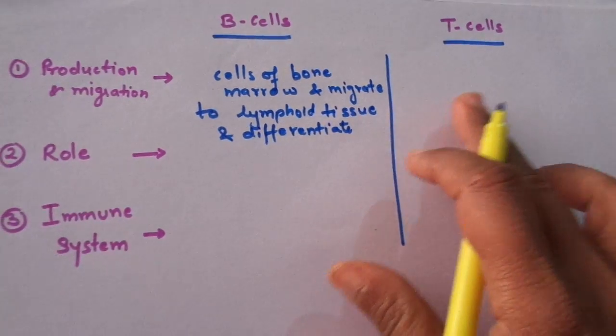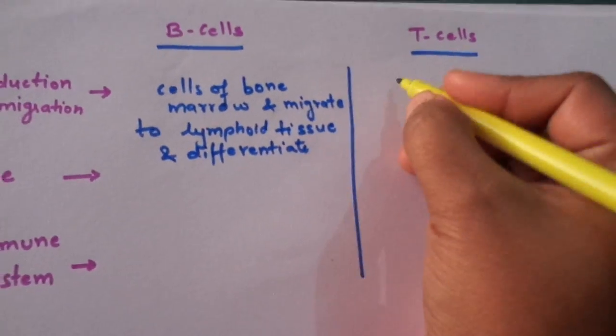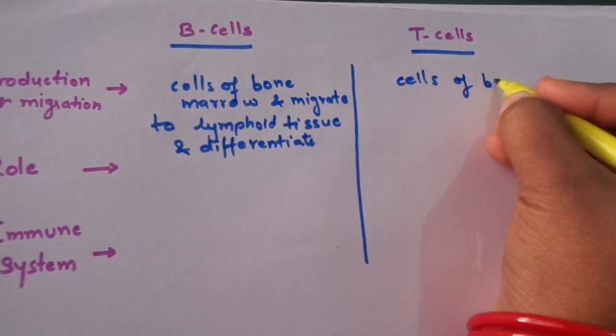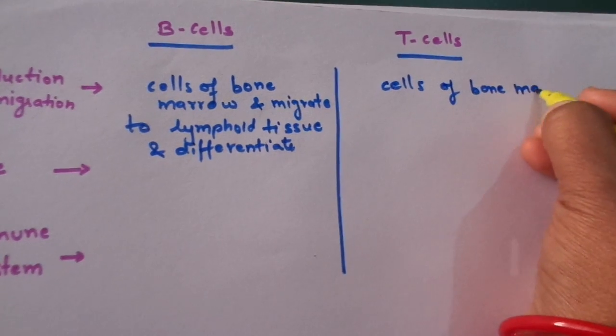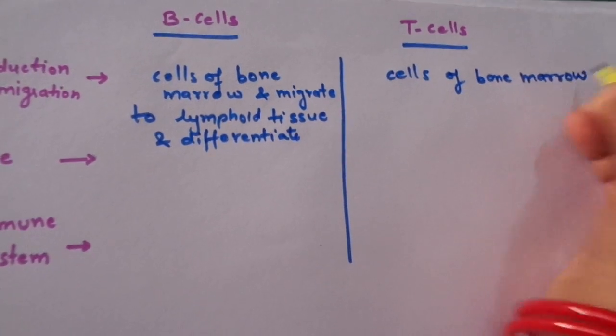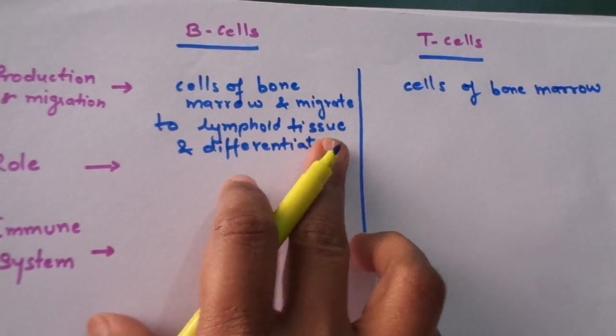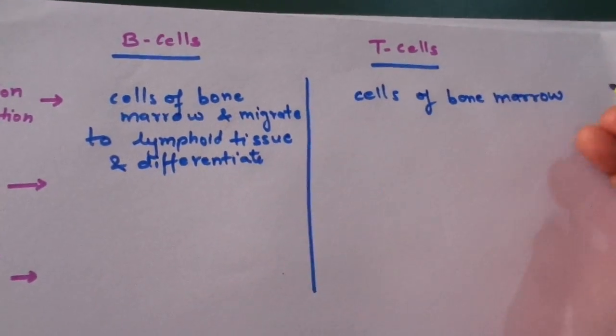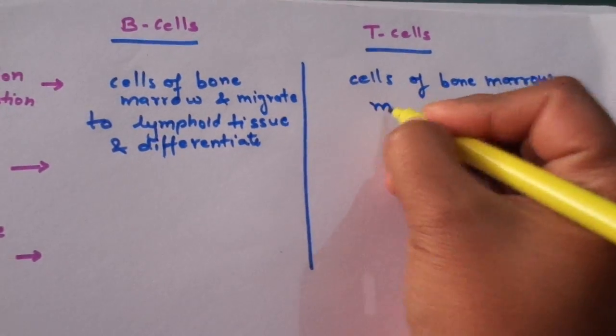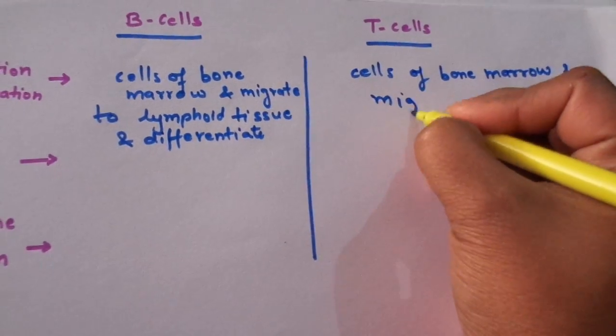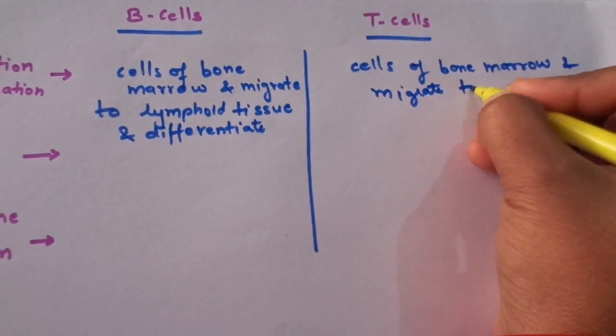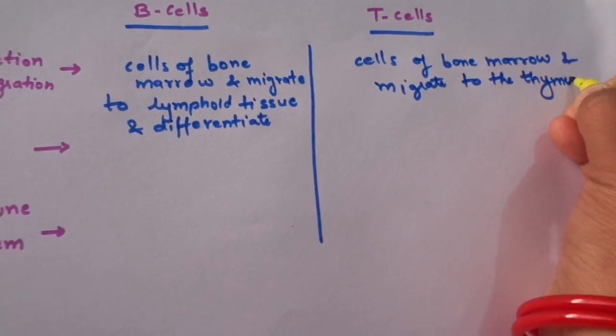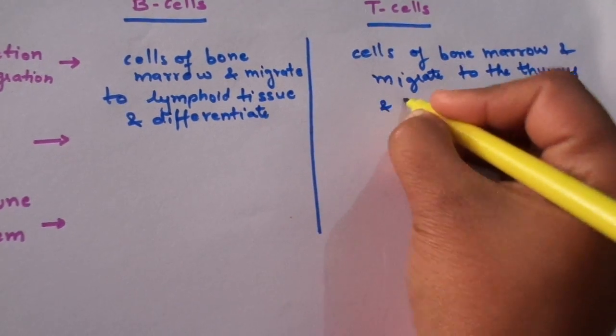Likewise, T cells are also produced in cells of bone marrow. However, whilst B cells migrate to lymphoid tissue, T cells are different from B cells as they migrate into the thymus and then differentiate.